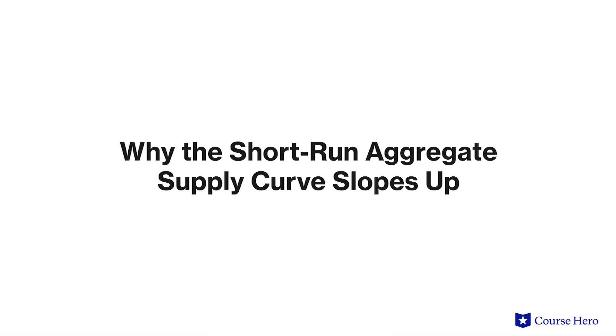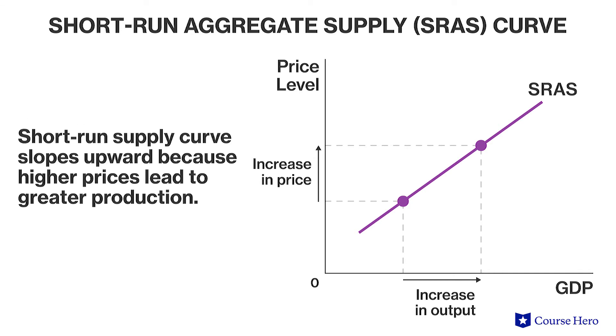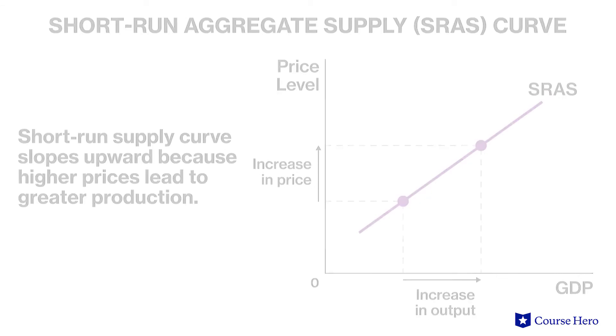How the aggregate supply curve is different in the short run and in the long run is a crucial component of understanding economic shifts in the short run. Short-run aggregate supply is the major factor determining short-run economic behavior and is highly influenced by prices. The short-run supply curve slopes upward because higher prices lead to greater production, explained by three main theories.